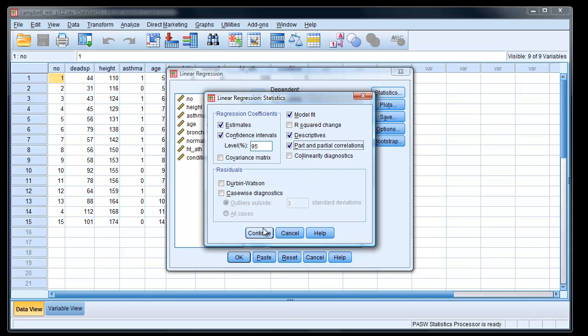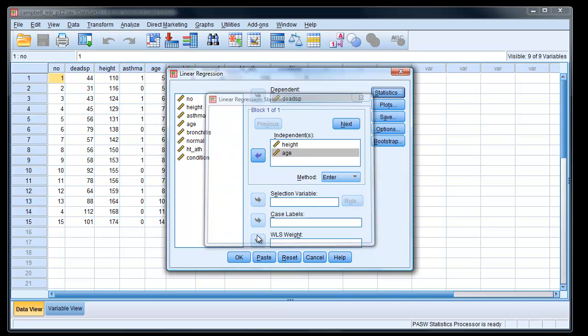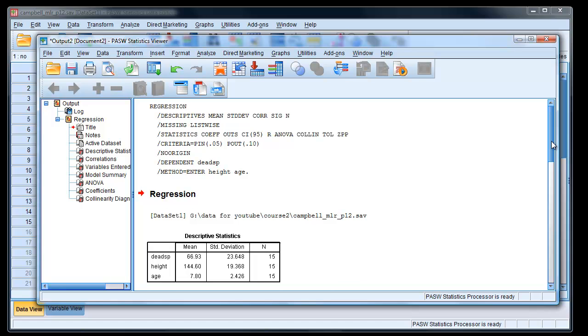And I'd like the part and partial correlations. The reason for these is because it tells us the contribution each variable makes, each input variable. You'll see when we get the results. And we'll choose collinearity diagnostics as well. Continue. OK. And here's the result.